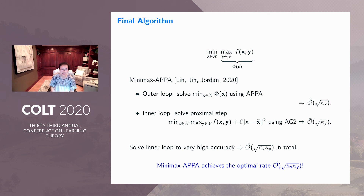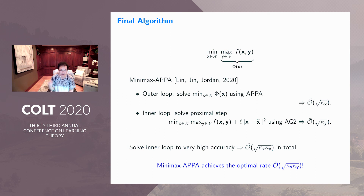This concludes that our new algorithm, which we call minimax APPA, achieves the near-optimal rate of sqrt(kappa_x * kappa_y), matching the lower bounds up to only polylogarithmic factors.